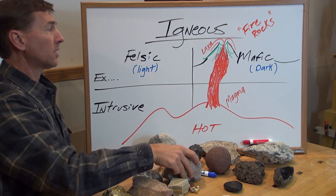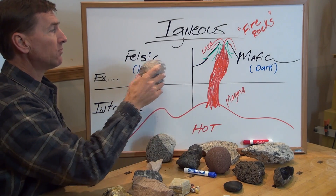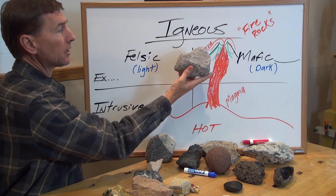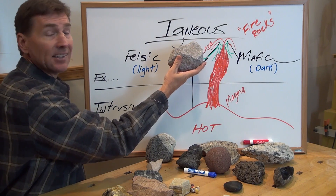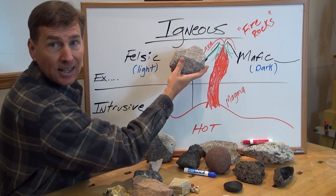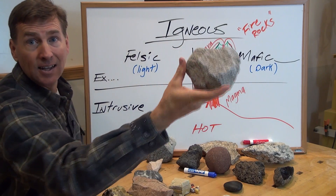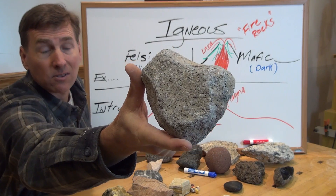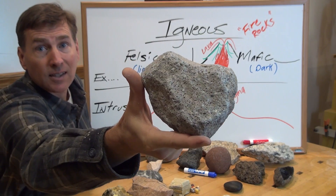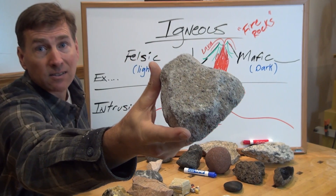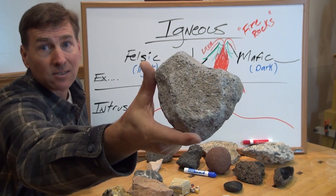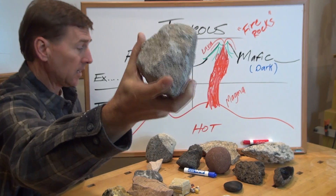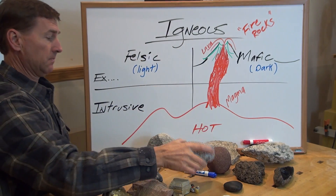In the middle, kind of halfway between felsic and mafic, it is a lava rock — it is an andesite. An andesite. And that is named from the Andes Mountains. You see a lot of this in the Sierra Nevadas as well.